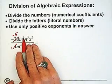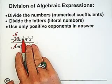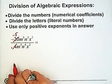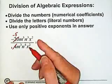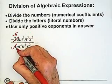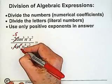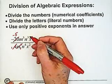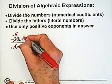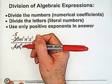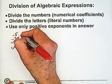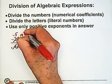Here we have m to the fifth in the numerator and m cubed in the denominator. If we divide this by m cubed, we end up with 1 — so all those 3 are gone. If we divide the top by m cubed, we take away 3 of our m's, and so this becomes m squared.